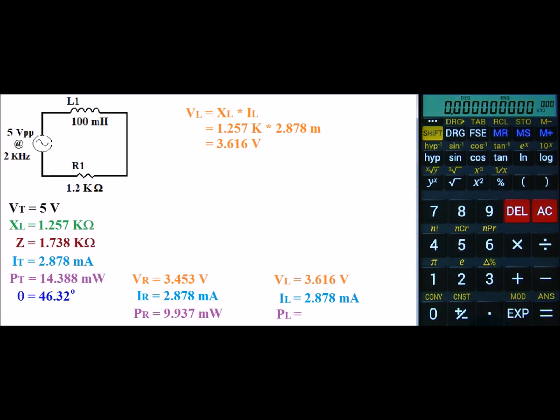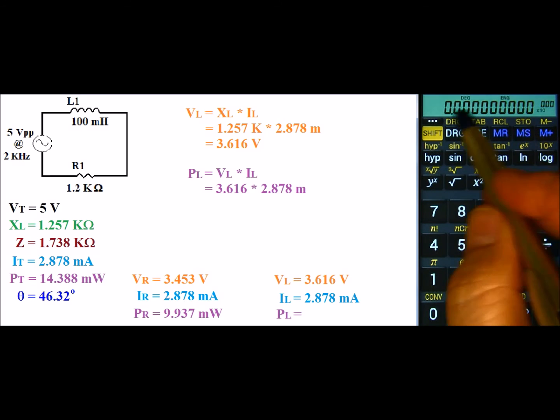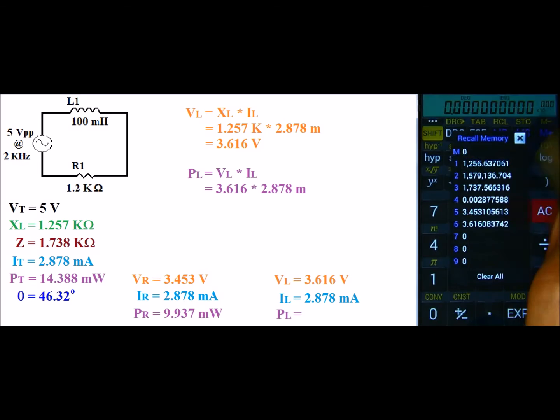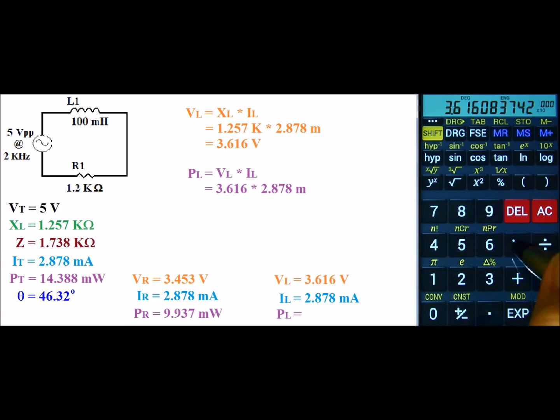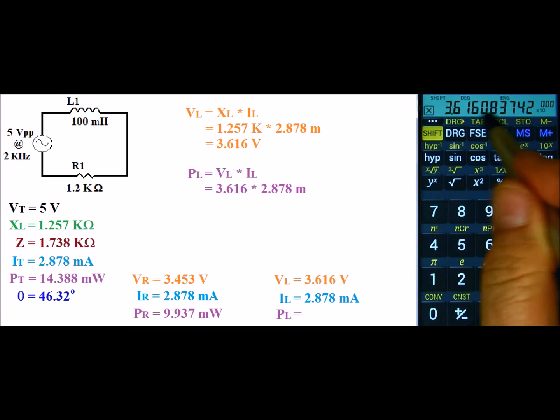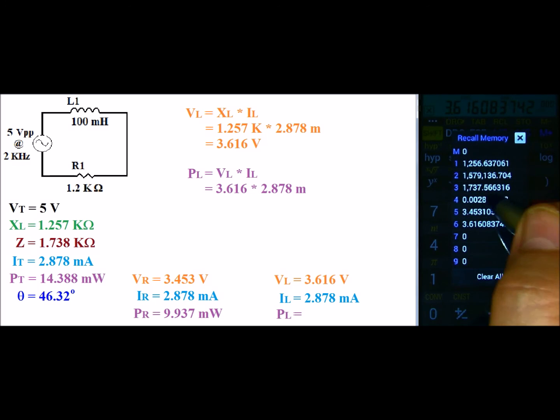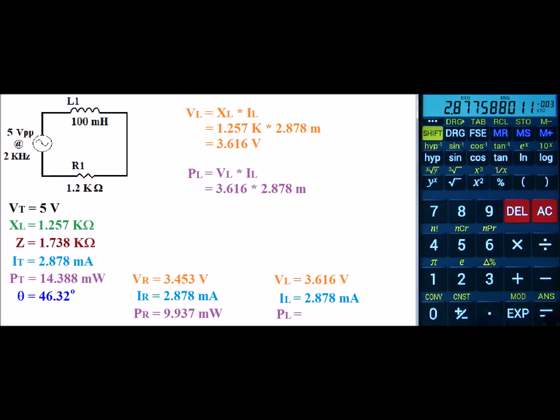Next is PL. PL is Vl times IL. So you have 3.616 times 2.878. So I'm going to go ahead and recall my voltage, times, and I'm going to go ahead and recall my current. And this gives me a power rating of 10.406 milliwatts.